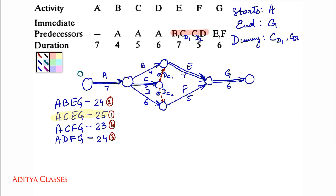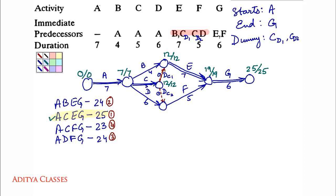First path: A, C, E, G. Starting at 0: 0 plus 7 gives 7; 7 plus 5 gives 12; 12 plus 0 gives 12; 12 plus 7 gives 19; 19 plus 6 gives 25. For the backward pass on the critical path, the critical durations are final: 25 minus 6 is 19; 19 minus 7 is 12; 12 minus 0 is 12; 12 minus 5 is 7; 7 minus 7 is 0.